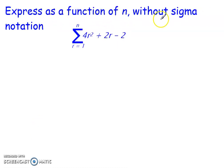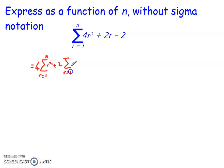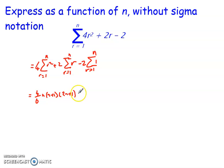Let's look at a worked example: express a given sigma expression as a function of n without sigma notation. Splitting it up using the rules of sigma notation gives 4 times the sum of r² plus 2 times the sum of r minus 2 times the sum of 1. Substituting the identities: 4·(1/6)n(n+1)(2n+1) for the first part, plus 2·(1/2)n(n+1) for the second part, minus 2n for the third part.